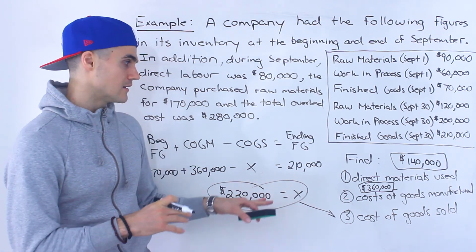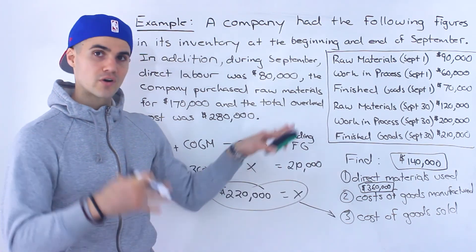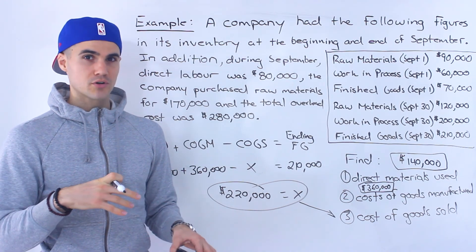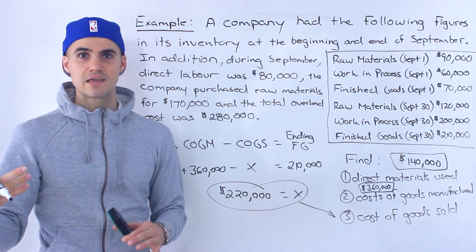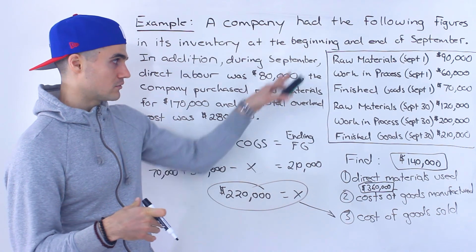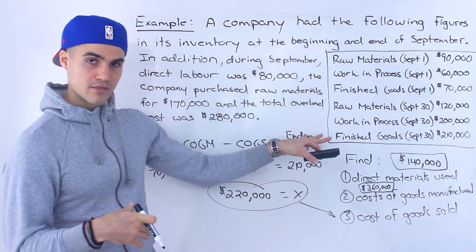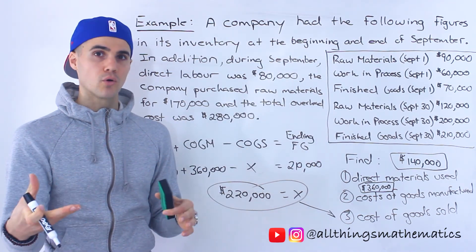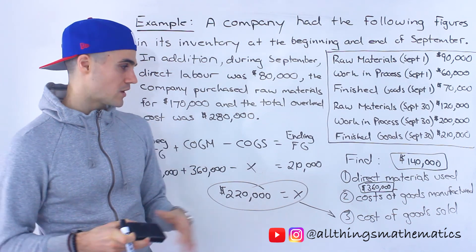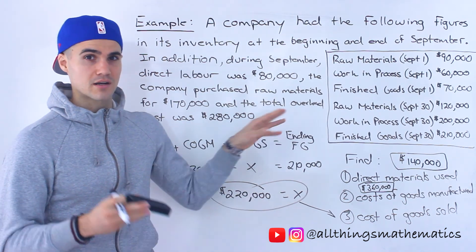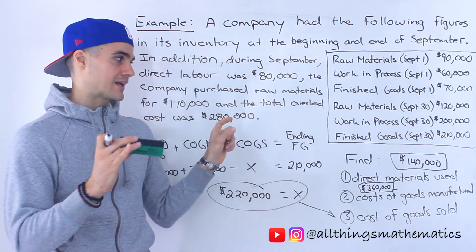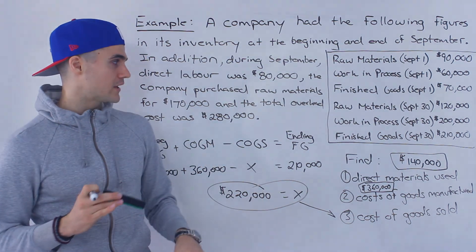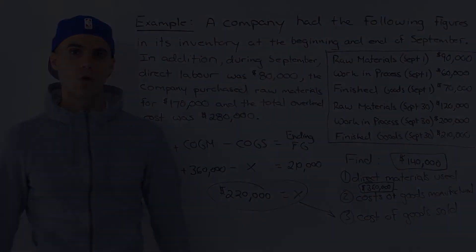So the final answers are: direct materials used $140,000, cost of goods manufactured $360,000, and cost of goods sold $220,000. The way you solve for these comes right out of that flow chart — you just identify which variable you're solving for. The questions aren't always going to be this simple. Sometimes you'll have to work backwards and connect certain things, so it does get more complex, but this was a good warm-up.